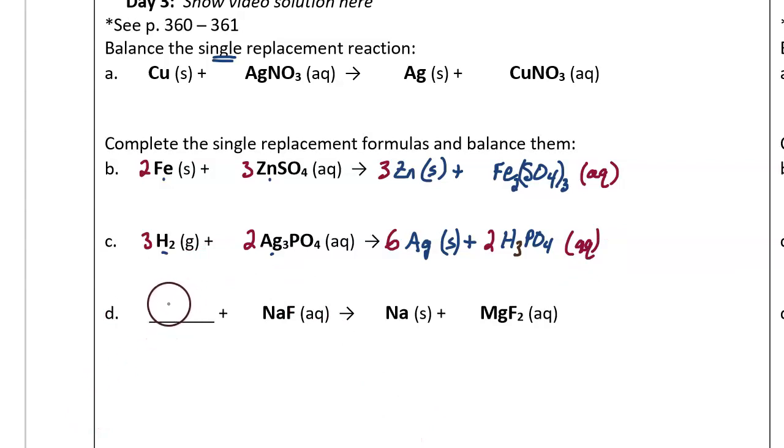Question D. Some reactant plus sodium fluoride produces sodium plus magnesium fluoride. What is in that missing spot, knowing that this is the product? It looks like it needs to be magnesium. Magnesium is a metal, so it is a solid.